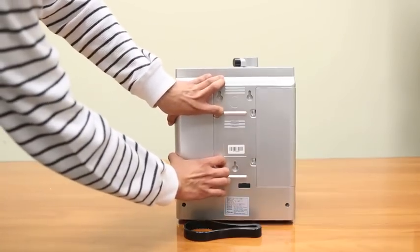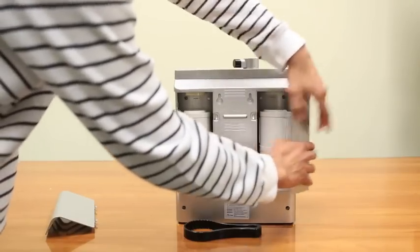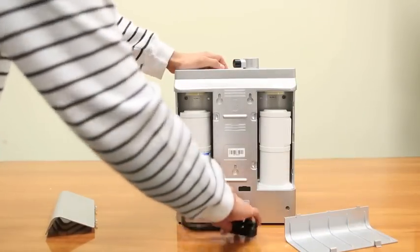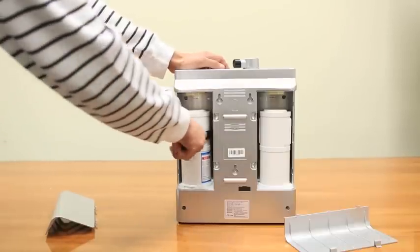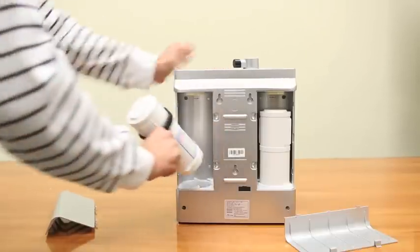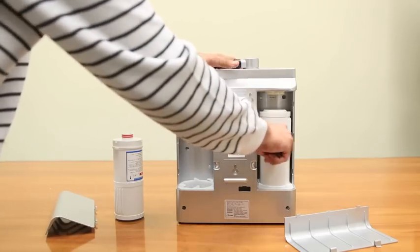Simply remove the back doors from both sides of your ionizer. Slide the filter wrench over the filter and turn it counterclockwise to remove the filter. The same process should be repeated for filter number two.